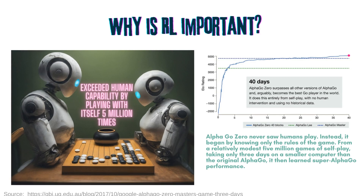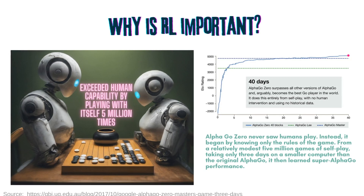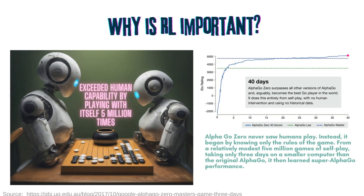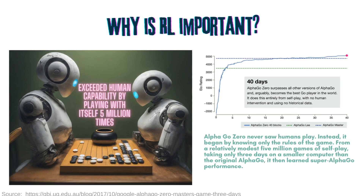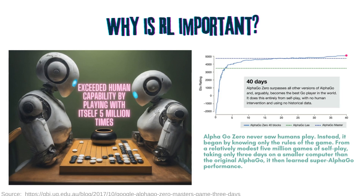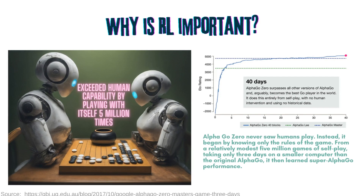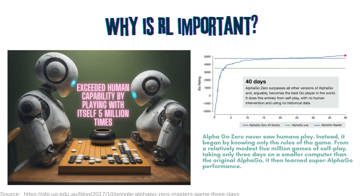Not only does RL have wide commercial applications, it is also one of the key techniques used in the quest for ASI — artificial superhuman intelligence. Because RL systems can learn simply by interacting with an environment, they are not limited by the ceiling of human knowledge. Many large language models trained using unsupervised learning off human-generated content are able to exceed humans in terms of how much information they can digest and how fast they can generate. But RL systems have the potential to actually exceed human knowledge.